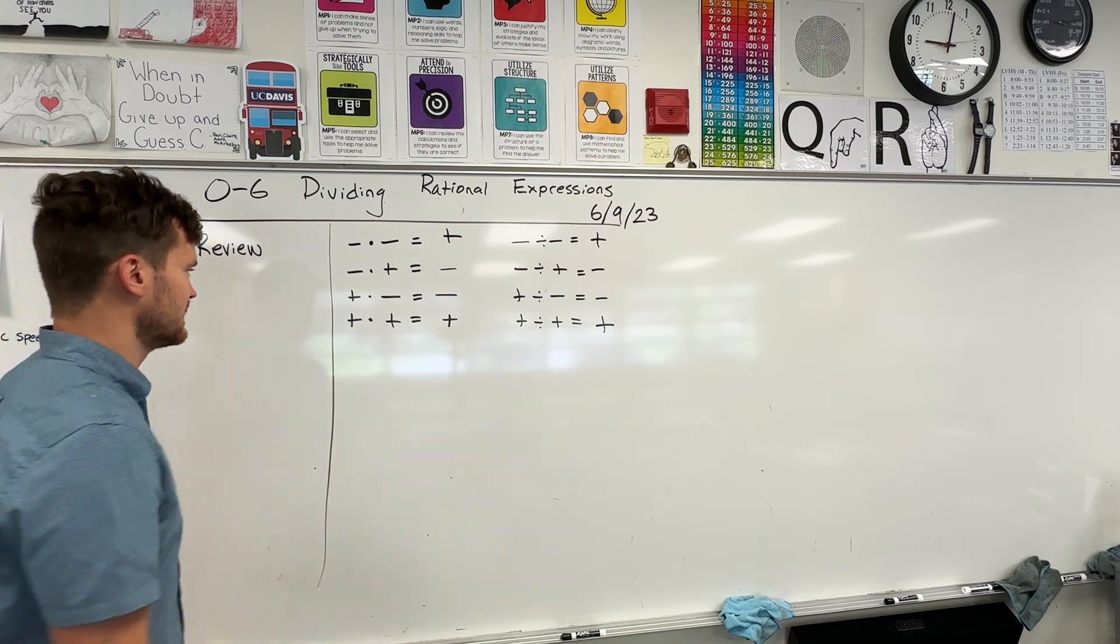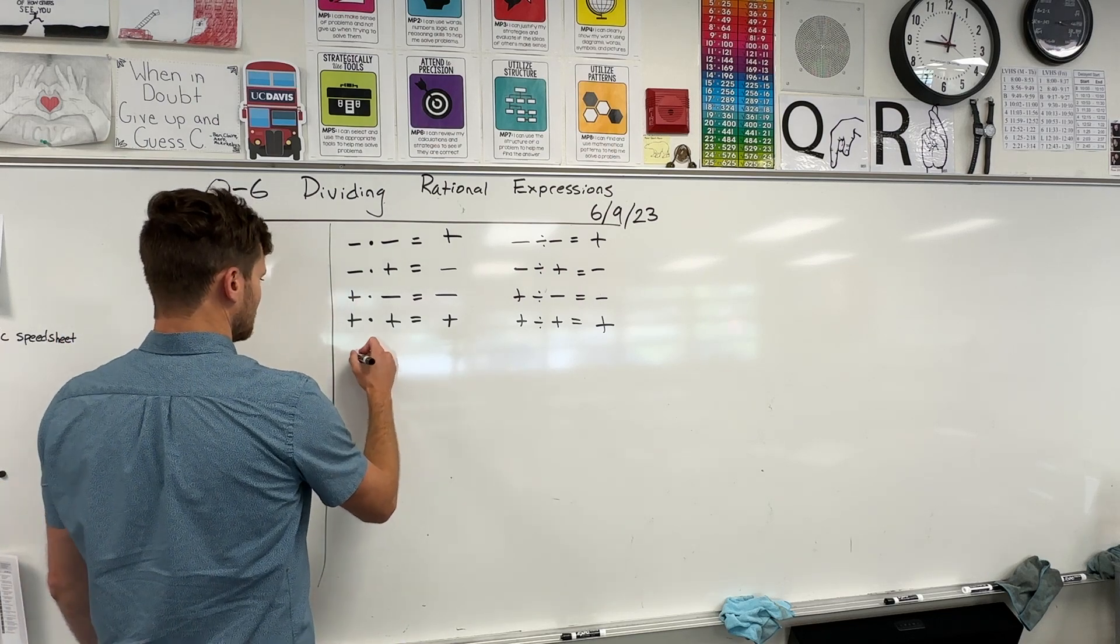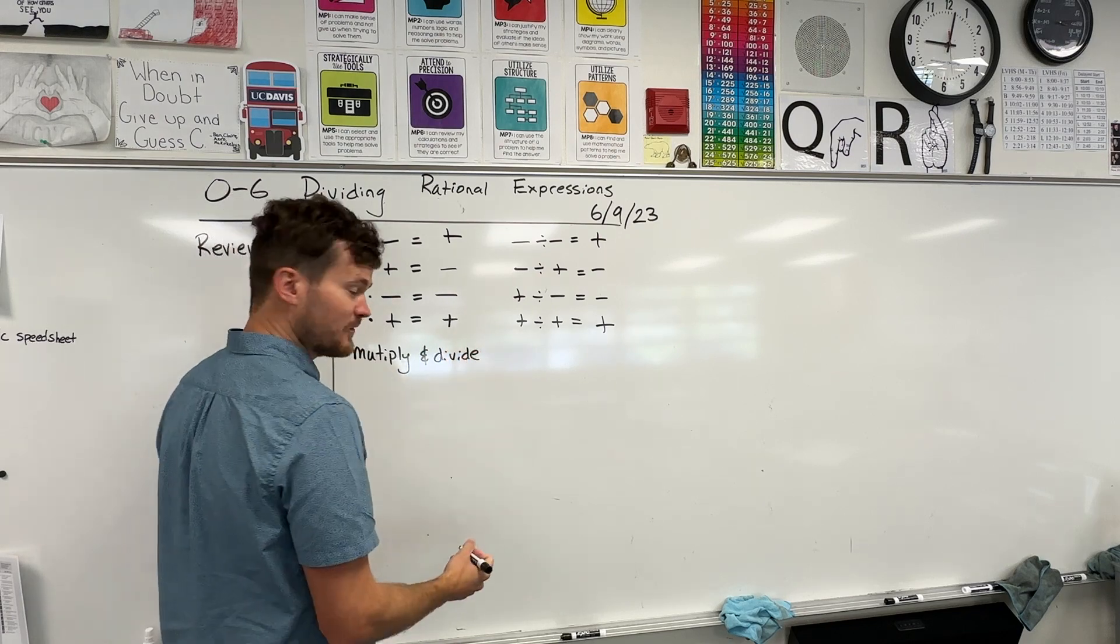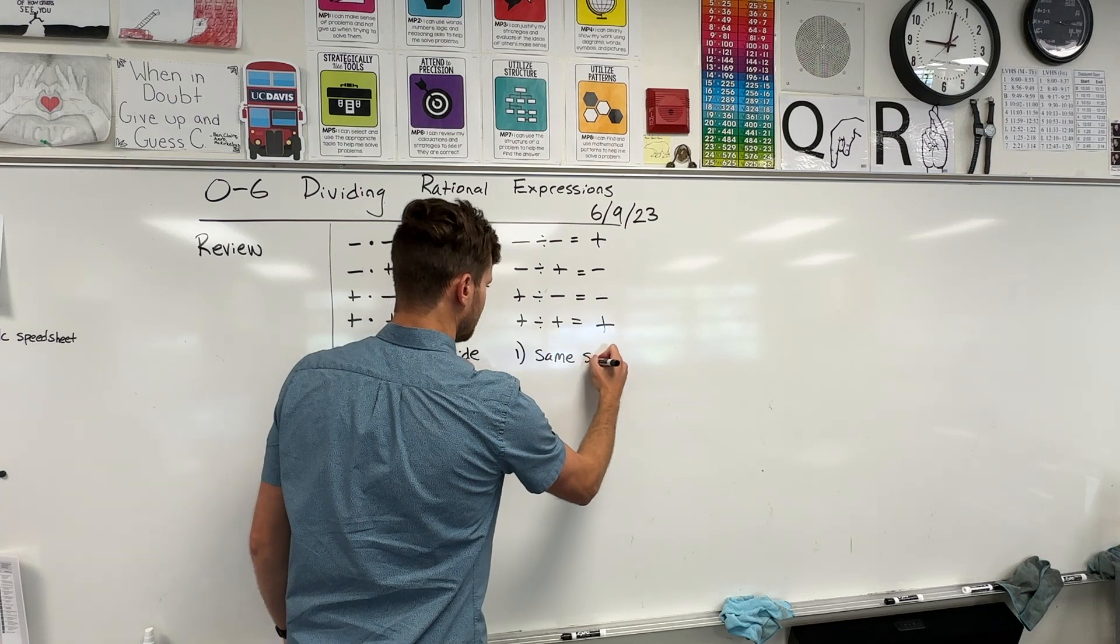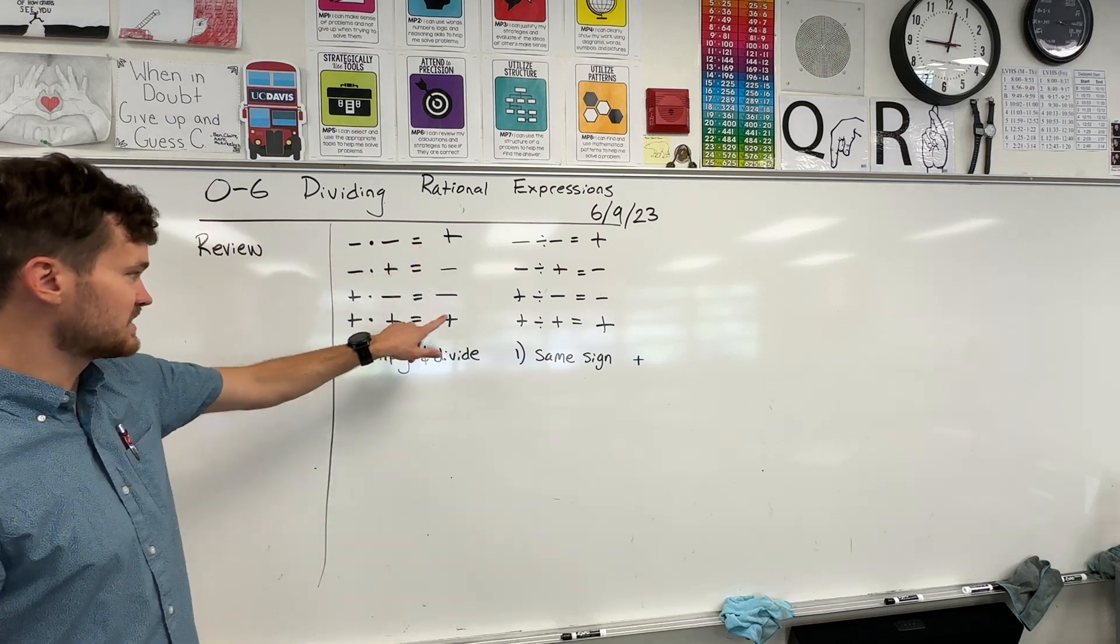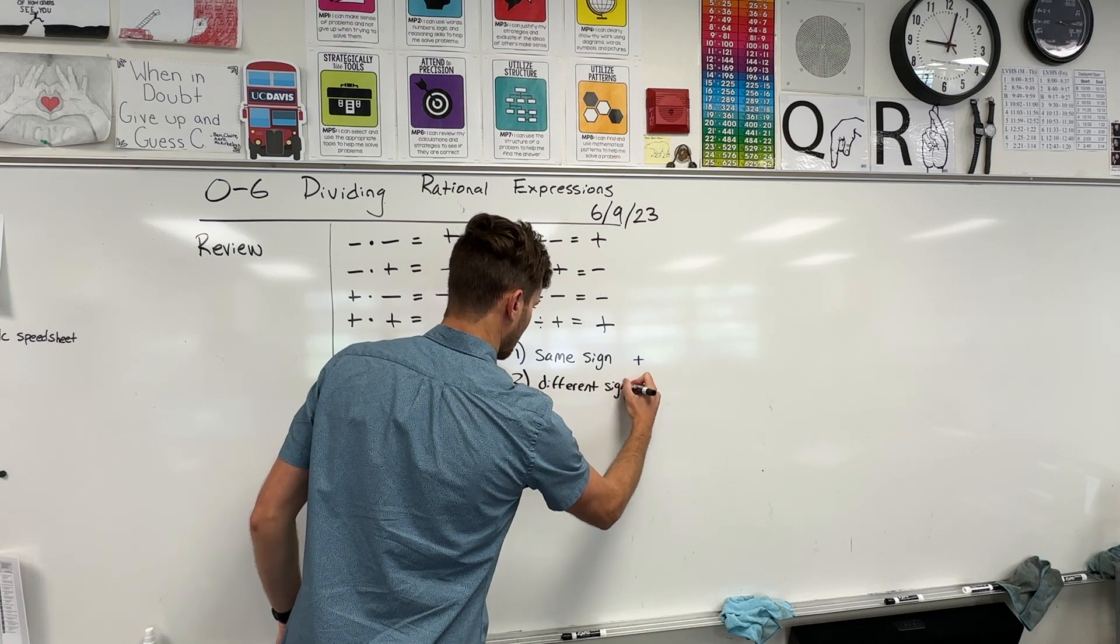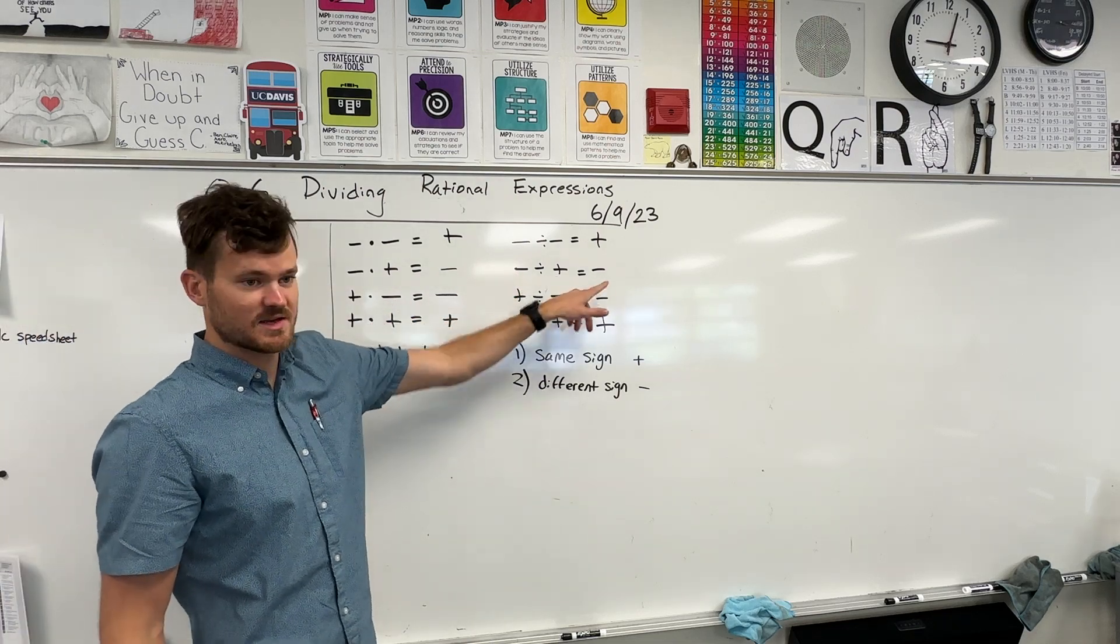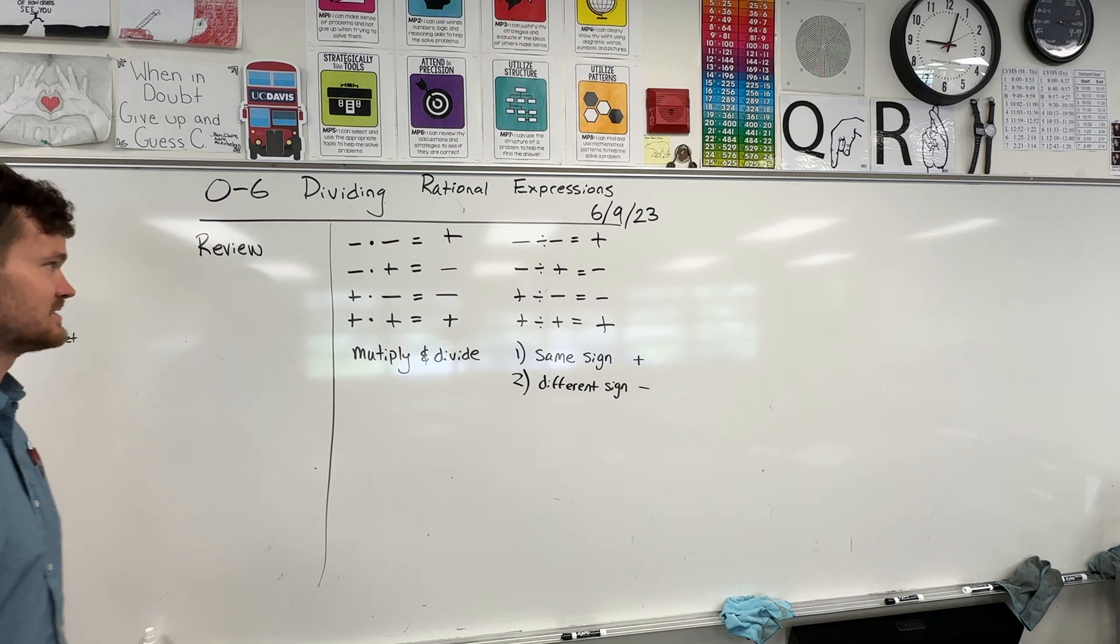I'm going to rewrite these rules. I'm changing the multiplication into a division symbol. So if I do a negative divided by a negative, that's the same thing as a positive. I'm switching it out to a division symbol. So negative divided by a positive, positive divided by a negative, positive divided by a positive, and recopy the same signs: negative, negative, positive. In general, if you have the same sign when you're multiplying and dividing, it's going to be a positive. If you have a different sign, it's going to be a negative.